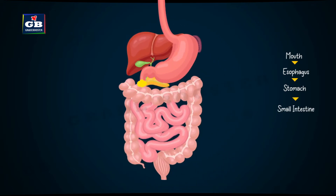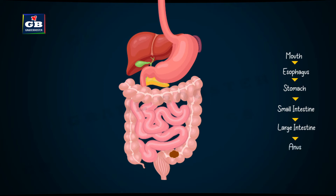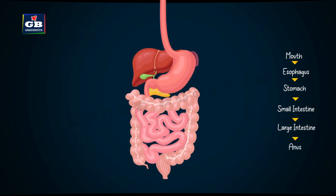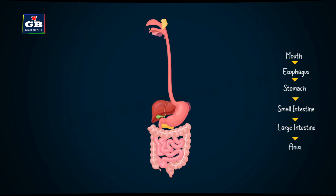it passes to the small intestine, from there to the large intestine, and the undigested food is finally excreted through the anus. This is the flow of food in our digestive system.